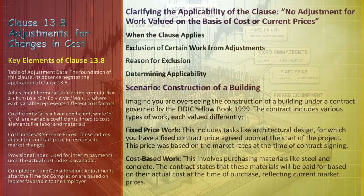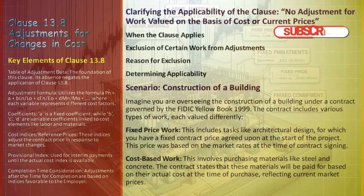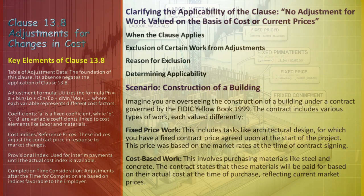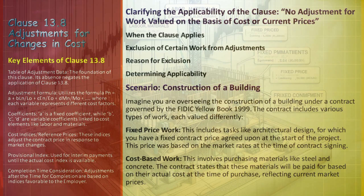For fixed price work, Clause 13.8 is relevant. Consider a scenario where labor costs increase significantly due to market changes six months into the project — under Clause 13.8, the contract price for the architectural design would be adjusted to accommodate this rise in labor costs, following the formula outlined in the clause. For cost-based work like steel and concrete, since their cost is pegged to current market prices at purchase time, any market price fluctuations are directly reflected in their cost. The clause stating no adjustment is to be applied to work valued on the basis of cost or current prices means the Clause 13.8 adjustment formula is not applied to these costs, as they already correspond with current market prices.